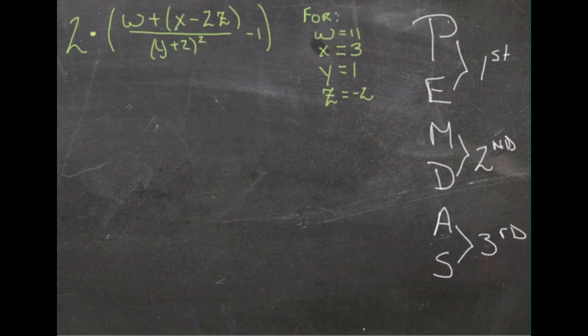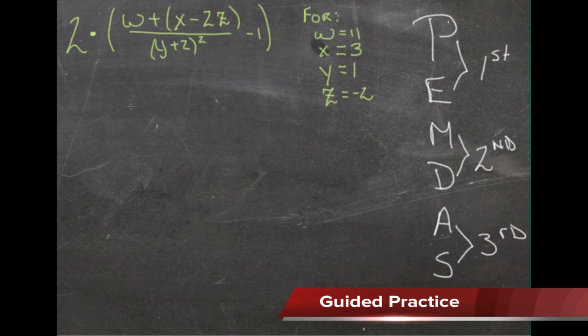In the lesson, example C was a calculator problem, so we're going to do the guided practice instead for a little bit more practice here. I'm going to do each step in a different color so you can see which things have changed from place to place. First thing we're going to do is substitute in values for each of the variables.